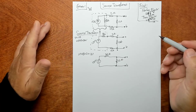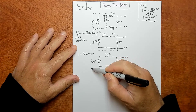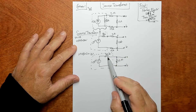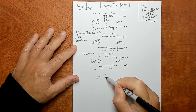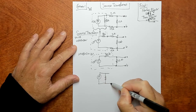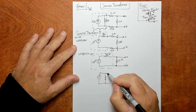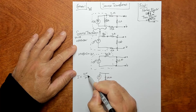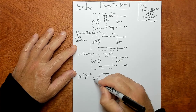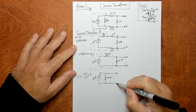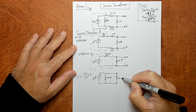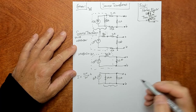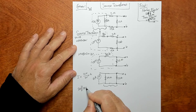At this point we can do another transform. We have a voltage source in series with a resistor, and we can replace that with a current source in parallel with a resistor — the reverse of what we did before. We move the 20-ohm resistor from series to parallel and solve for I using I equals V over R: 120 divided by 20 equals 6 amps. The rest of the circuit is still there. Now we have two parallel resistors, the 20-ohm and the 12-ohm, which combine to give 7.5 ohms.